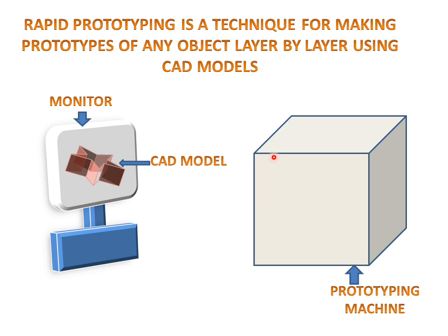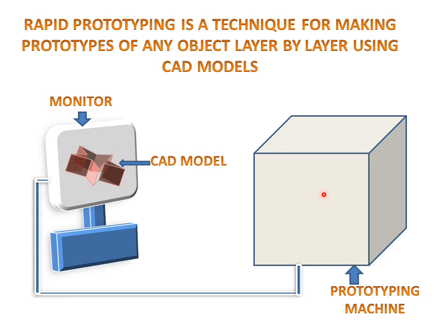There is a prototyping machine — we can also call this machine a 3D printer, which makes 3D prints. This is connected by wires through the monitor, which are the connecting cables.